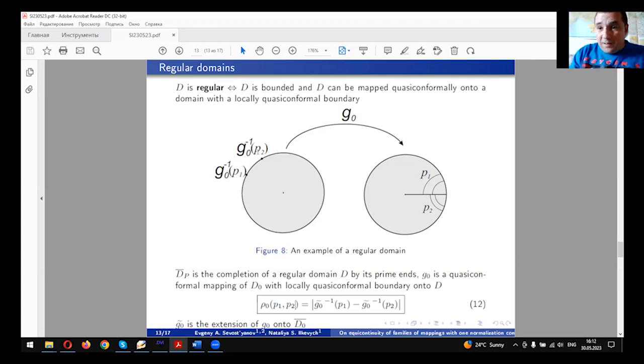It is not an obvious fact that there is some problem, this correspondence between points and prime ends. Näkki proved, the well-known scientist Näkki, specialist in quasi-conformal analysis, proved that there is such a correspondence for good domains, for domains with locally quasi-conformal boundary.